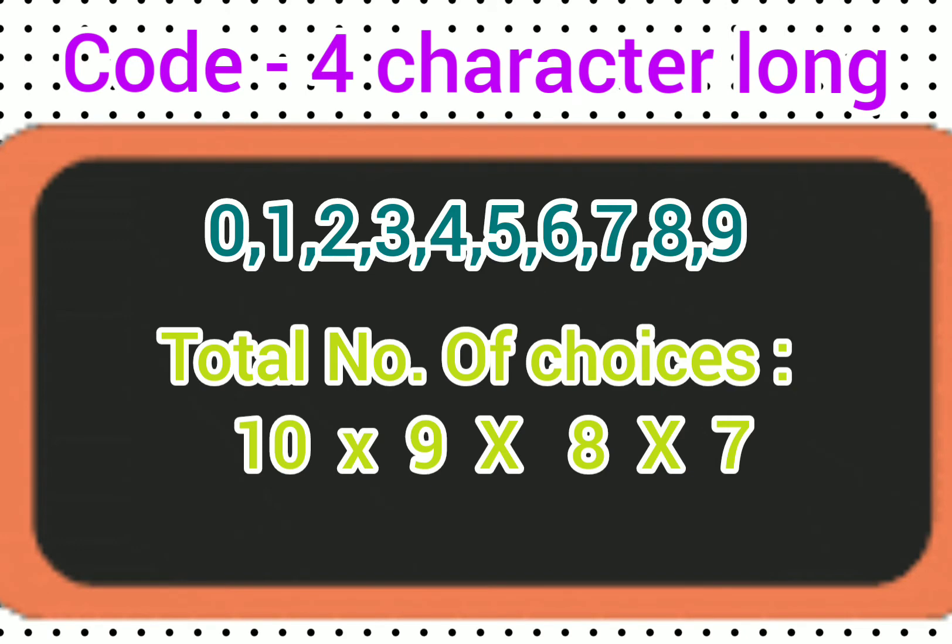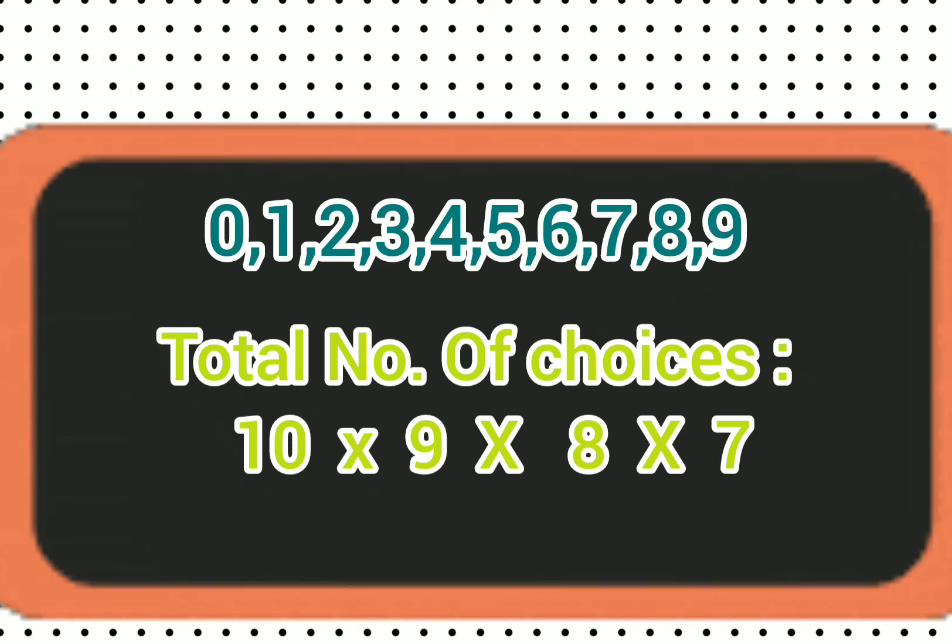Because we are considering that repetition is not allowed, so the total number of possible combinations that we get for 4 character long code will be 10 into 9 into 8 into 7. That is if we will multiply this we will get value 5040. It means we can make 5040 possible combinations of different codes. And this we are getting by multiplication rule.